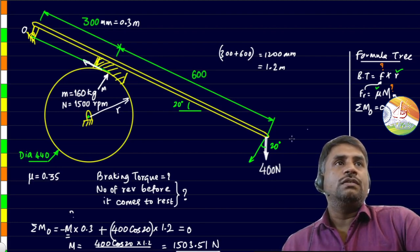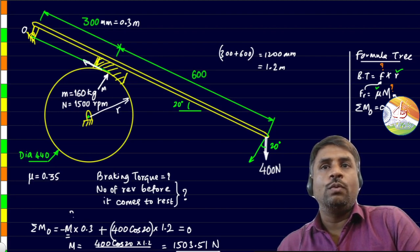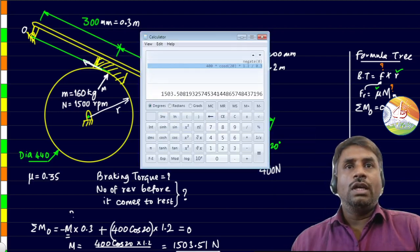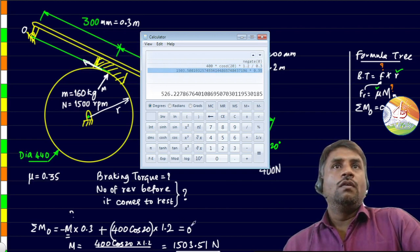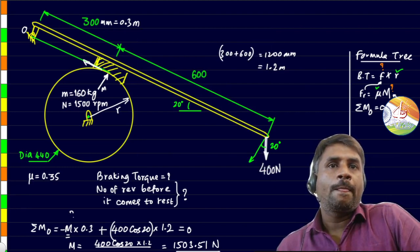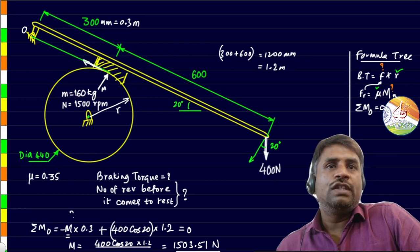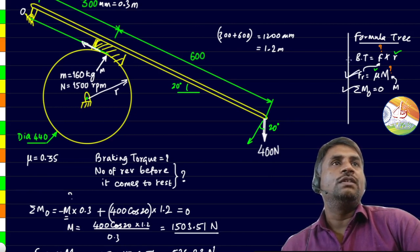This is the normal reaction that is acting here. Once we got the normal reaction, let's go ahead and find the friction force. Friction force is mu into the normal reaction. Mu value is 0.35. Multiply this with the value that we just calculated. That will give us 526.23. This is the amount of friction force that is acting.